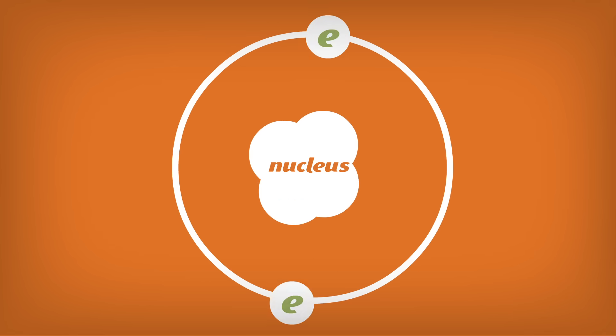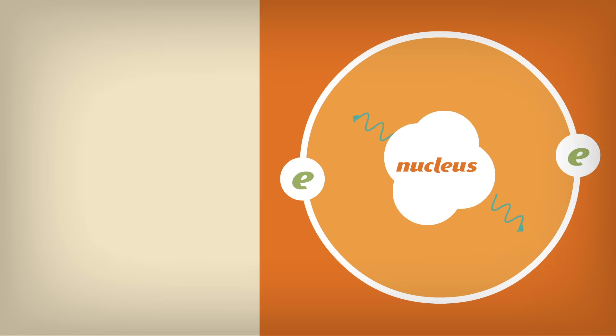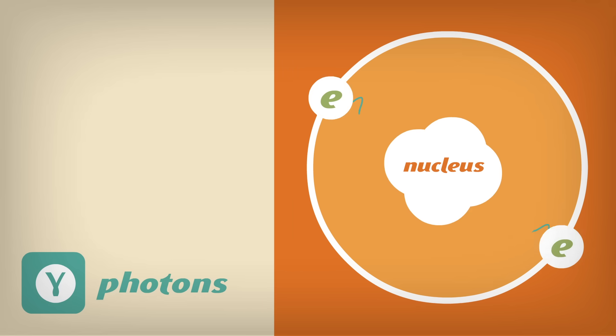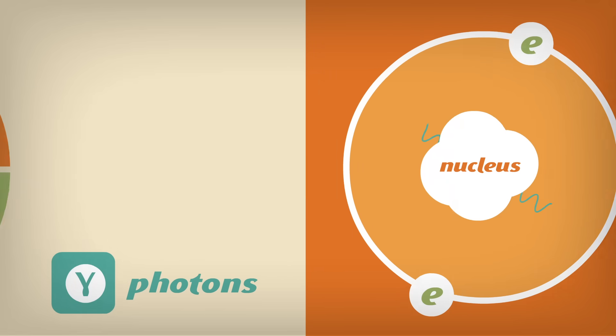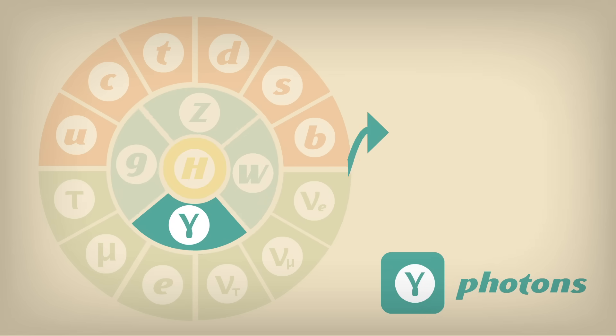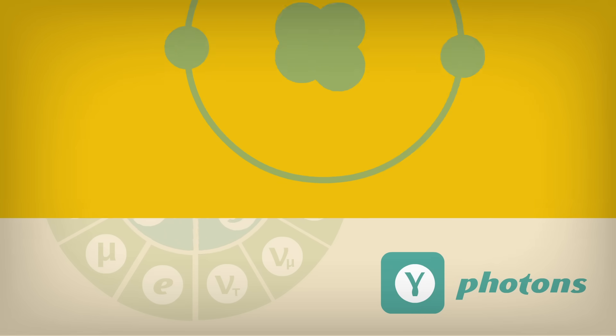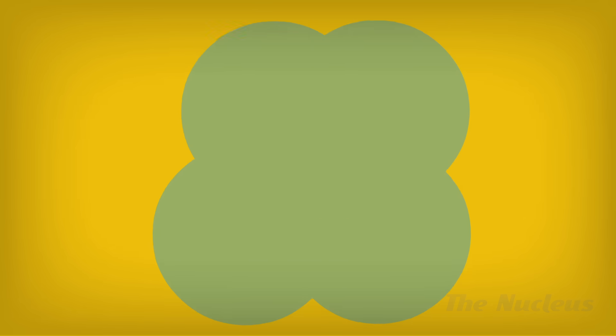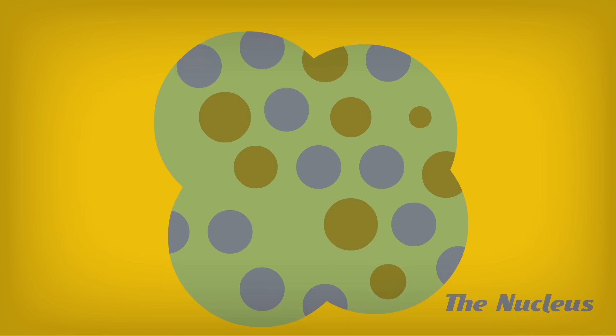Electrons are bound to an atom's nucleus by electromagnetism. They attract each other by exchanging particles called photons, which are quanta of light that carry the electromagnetic force, one of the fundamental forces of the Standard Model. The nucleus has more secrets to reveal, as it contains protons and neutrons.